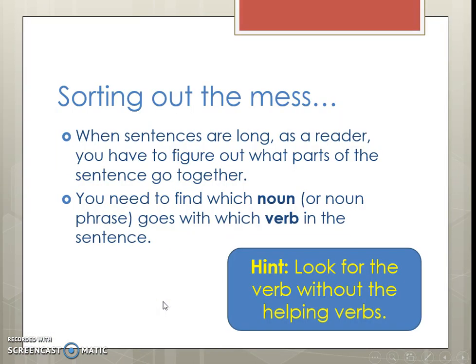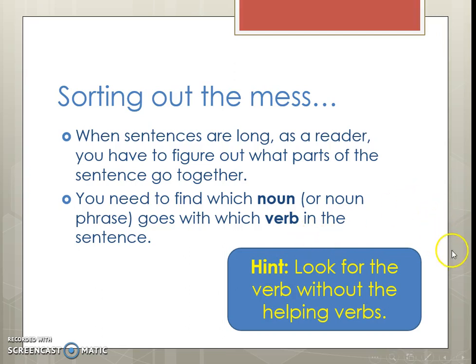First of all, we have to find the sentences that are long, and as a reader you have to figure out what words or parts of the sentence go together. You have to look and find the noun or the noun phrase that goes with the verb. Think of them as kind of a pair — a noun and a verb always go together. Sometimes we want to look for verbs without helping verbs — those is, are, was, and were. Let's take a look at some examples.